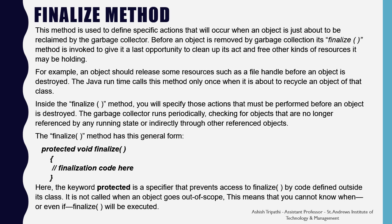The finalize method is used to define specific actions that will occur when an object is just about to be reclaimed by the garbage collector. Before an object is removed, its finalize method is invoked to give it a last opportunity to clean up and free other resources it may be holding — for example, releasing a file handle before the object is destroyed. The Java runtime calls this method only once when it is about to recycle an object of that class. The garbage collector runs periodically, checking for objects no longer referenced by any running state.